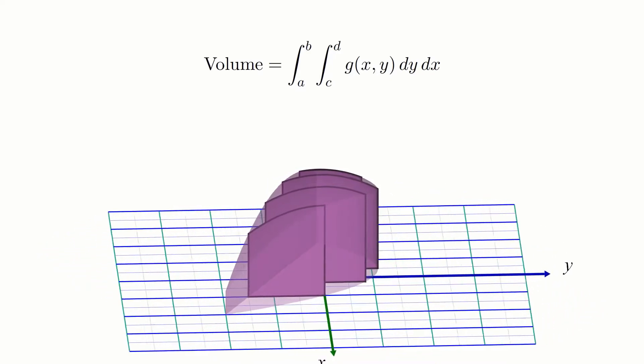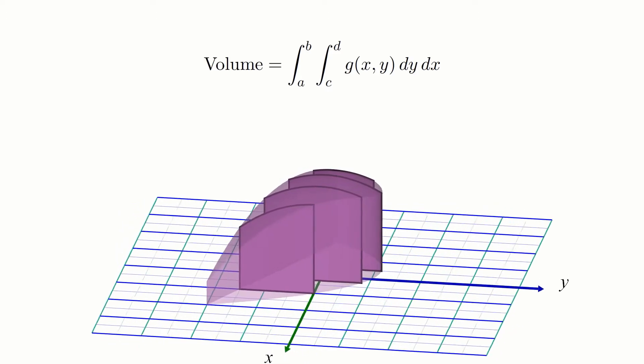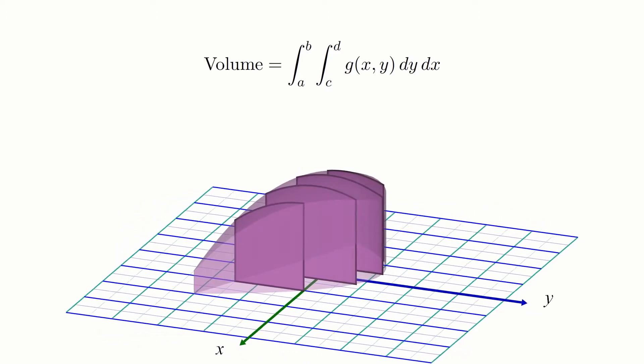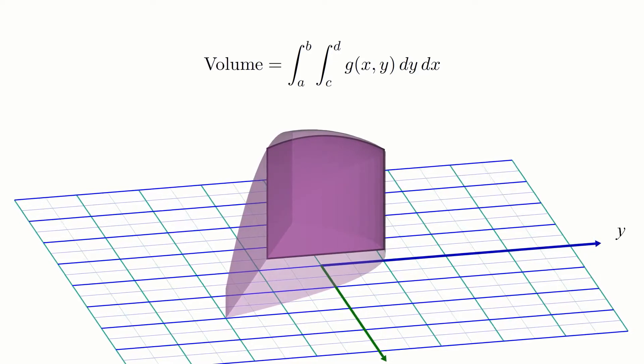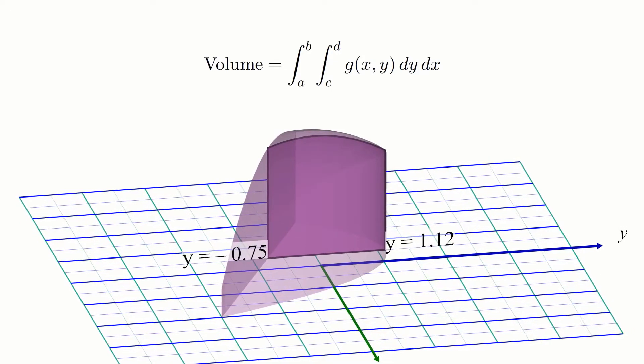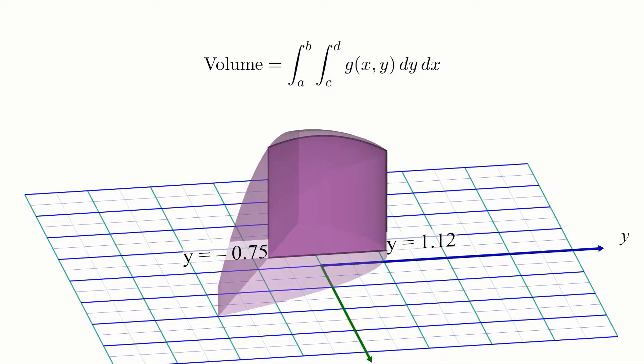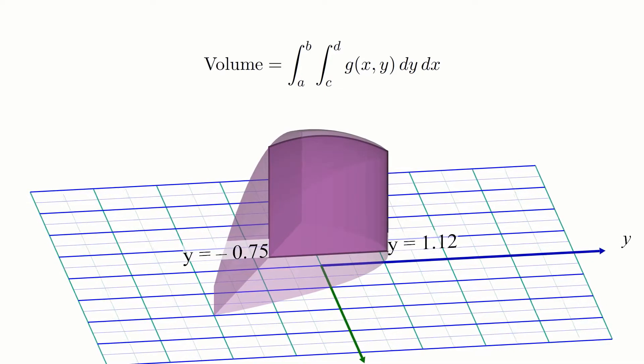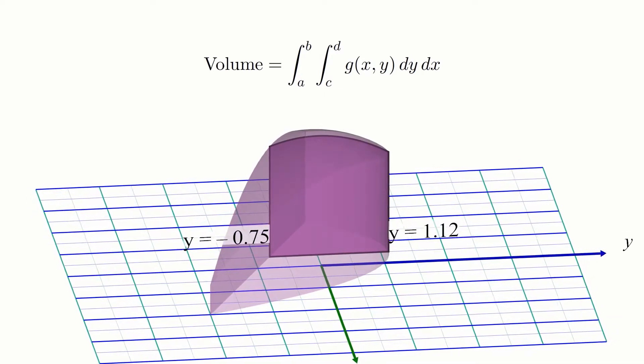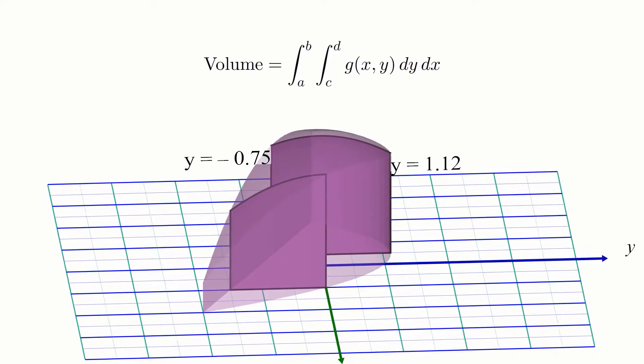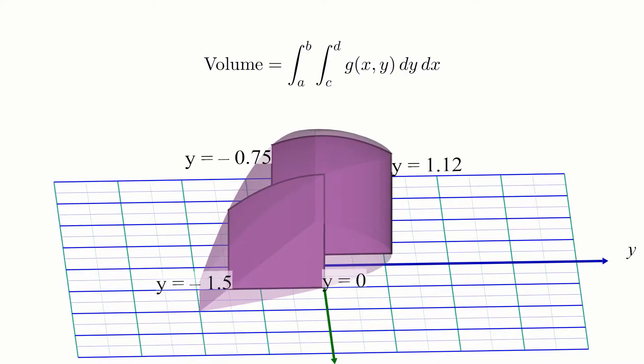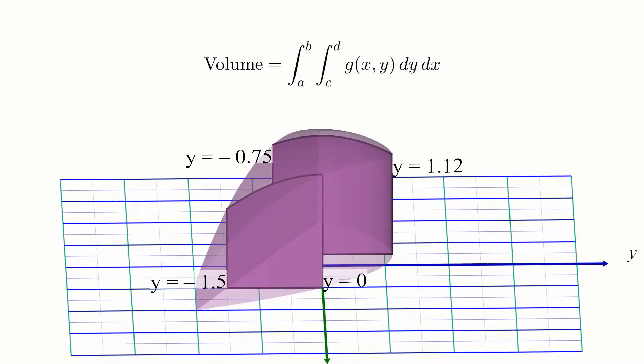But unlike before, the bounds of the integral will depend on which slice we're looking at. For example, if we're looking at this slice here, its lower and upper bounds are y equals negative 0.75 and y equals positive 1.12, respectively. But if we look at this other slice over here, it has lower and upper bounds y equals negative 1.5 and y equals 0.